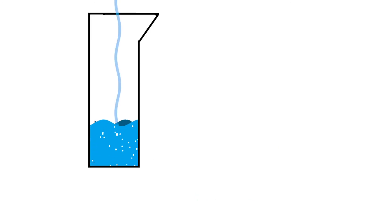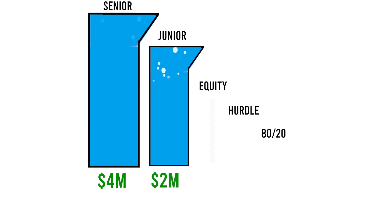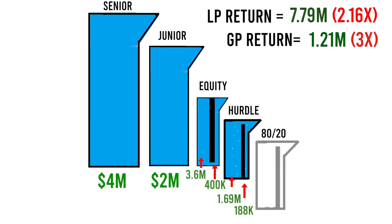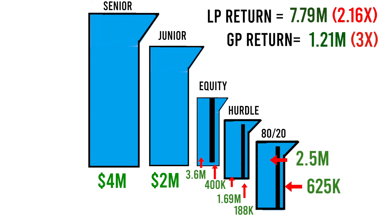If you've been keeping score, the total return to the LP was $7.79 million, or a 2.16x equity multiple, and the total to the GP was $1.21 million, or a 3x multiple. If you watched our debt video, these returns are way higher than those examples — now you see the power of combining debt and outside equity. There are many variations on the waterfall structure, like having multiple hurdles and multiple tiers of splits. We won't explain all of them in this video, but check out the links below for further resources if you're curious.